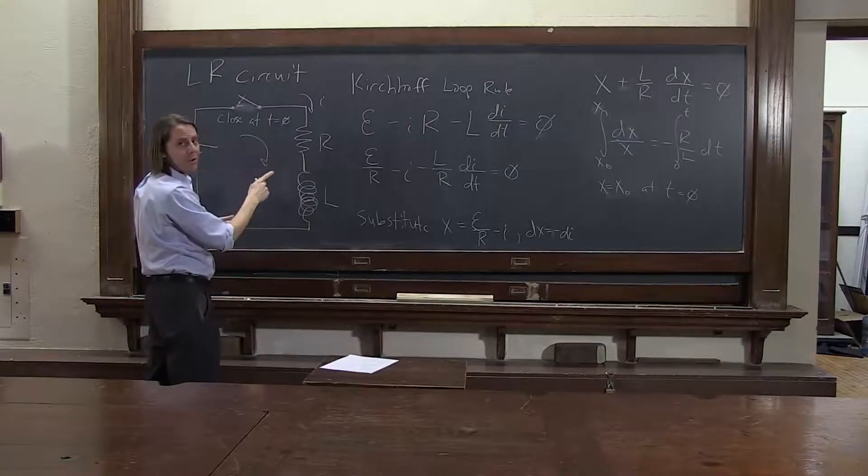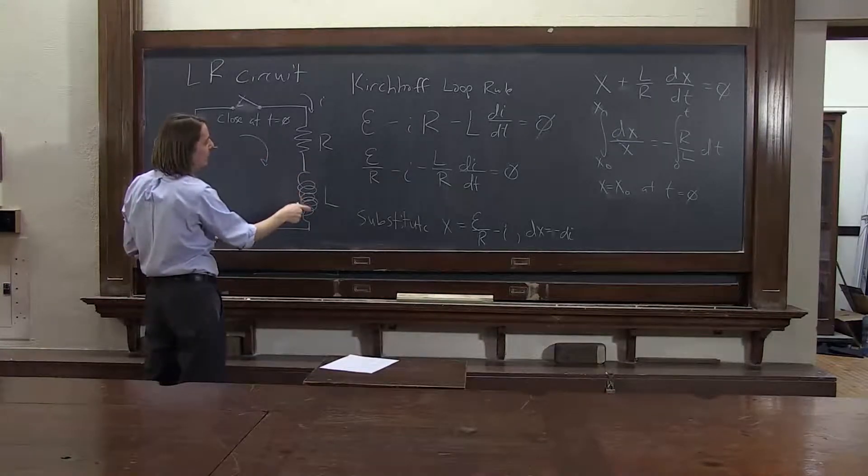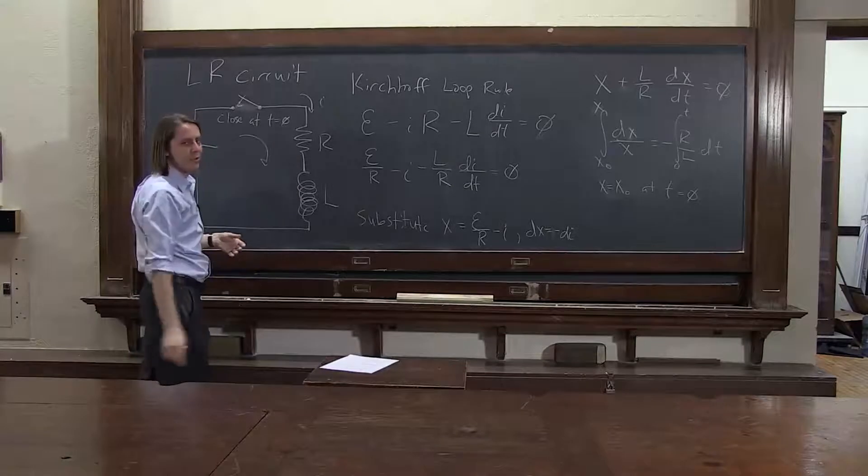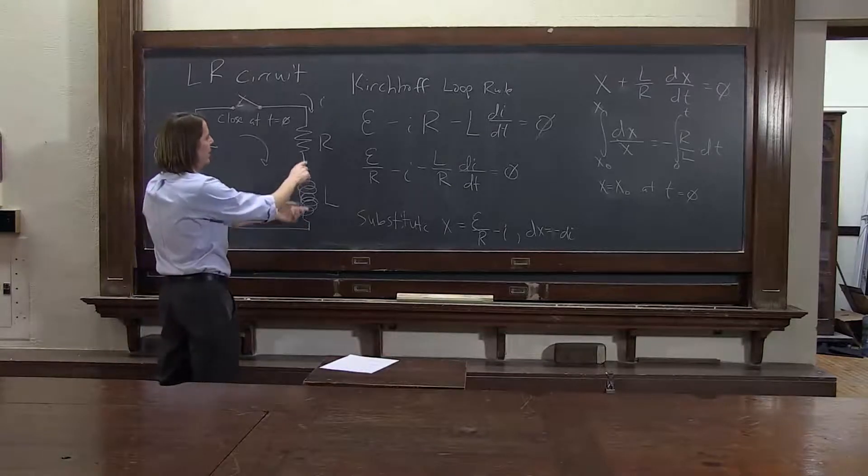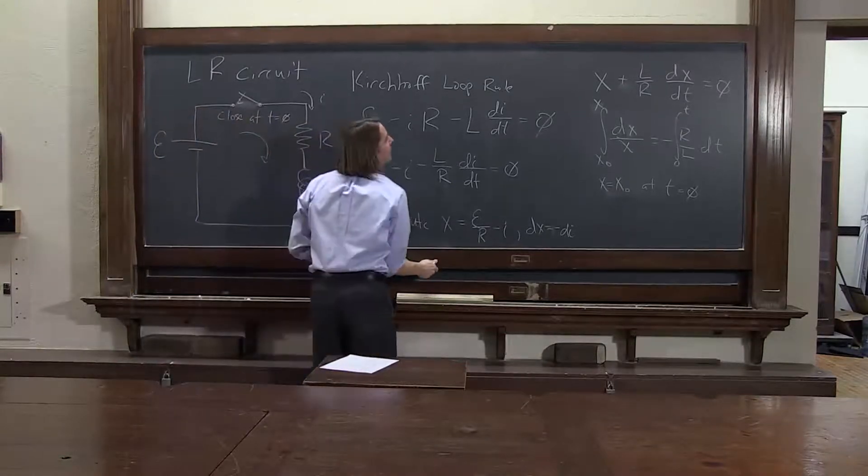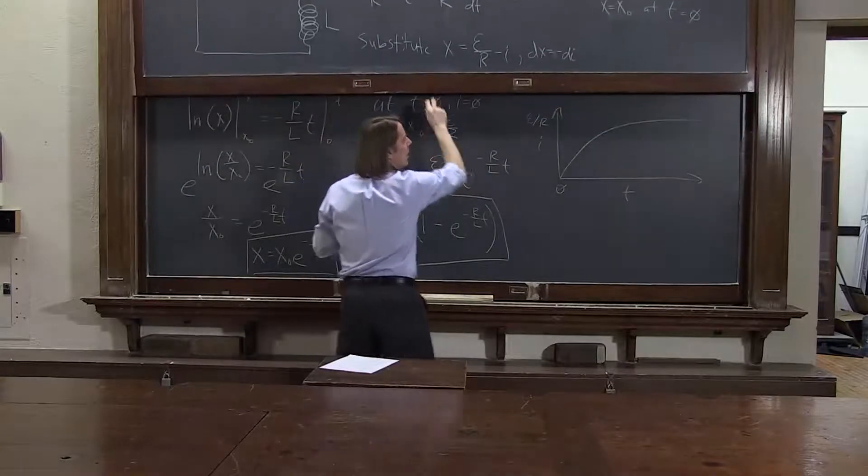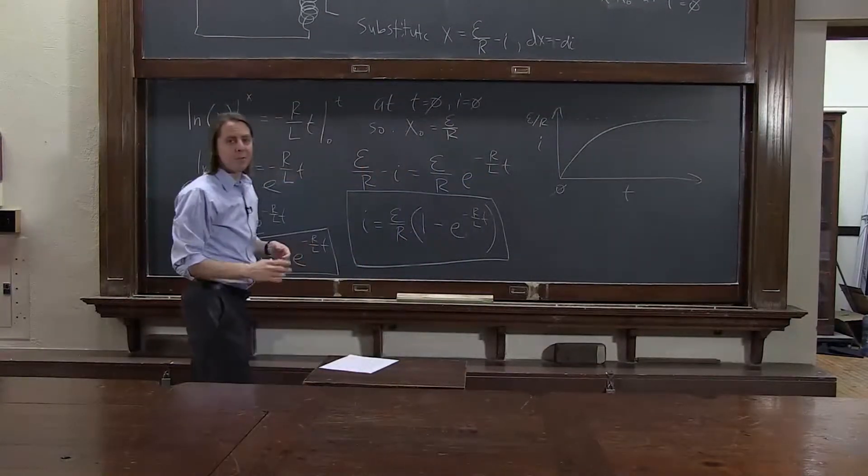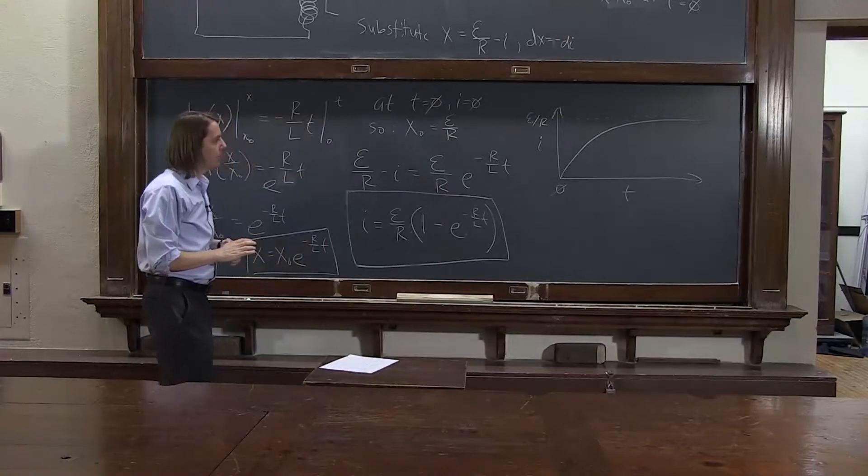constant magnetic field, no back emf, and then all your drop is here. So your potential drop starts here, and it transitions to here, following this equation. So that's the basic behavior of the LR circuit.